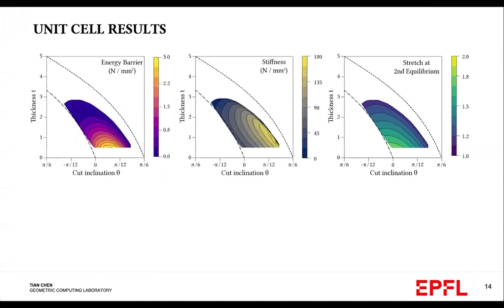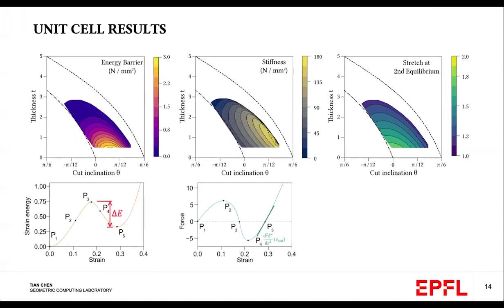And now we can similarly plot the two criteria, including the energy barrier and the stiffness. And we note that the maxima occurs for these two contour plots at different locations. This gives us the flexibility to choose the appropriate unit cell depending on specific applications. In our experiment, we always select the cell with the highest stiffness.